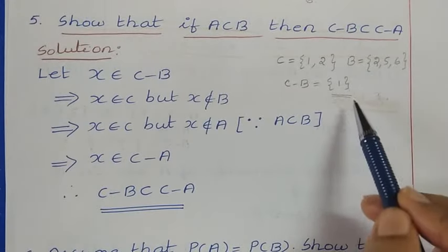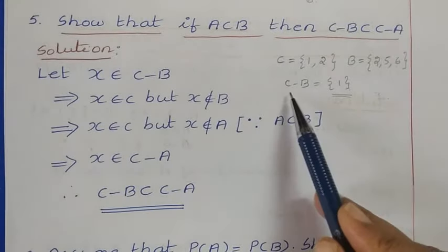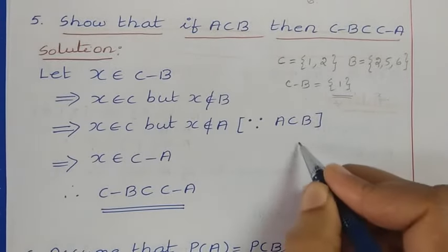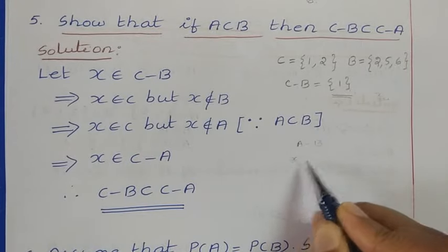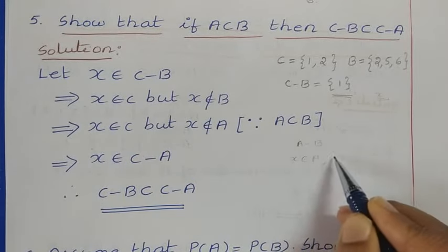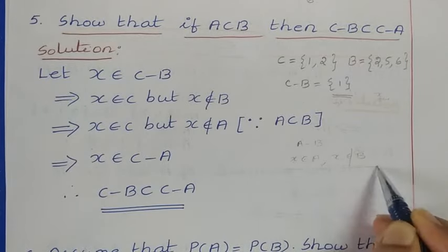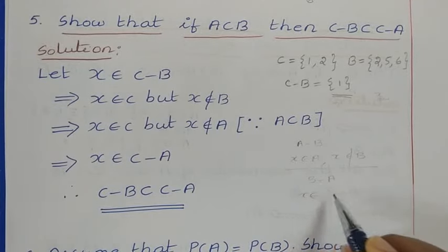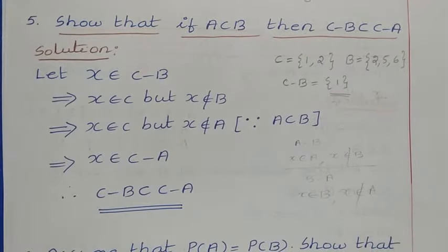For C minus B, we take elements where X belongs to C but X does not belong to B. Similarly, for A minus B, X belongs to A and X does not belong to B. For B minus A, X belongs to B and X does not belong to A. So like this way you have to consider.